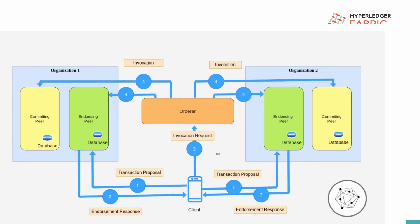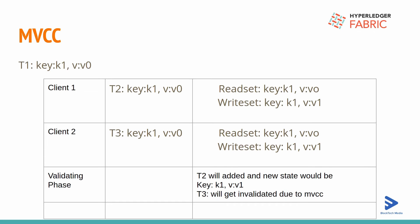Once the transaction gets validated, there is an MVCC check - Multi-Version Concurrency Control. Let's take one example. We have one transaction already added into our blockchain: Transaction T1, key is key1 and version is V0. So this transaction is already added. As per the configuration for creating any block, we have two parameters: batch time and batch size.